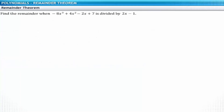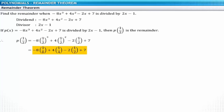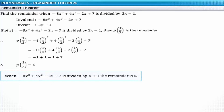In the next problem, find the remainder when 2x minus 1 divides minus 8x cubed plus 4x squared minus 2x plus 7. The divisor is 2x minus 1, which is of the form ax minus b. According to the guidelines, the remainder is p of b divided by a, so the remainder is p of 1 divided by 2. Replacing x with 1 divided by 2 in the polynomial, the remainder is equal to 6.